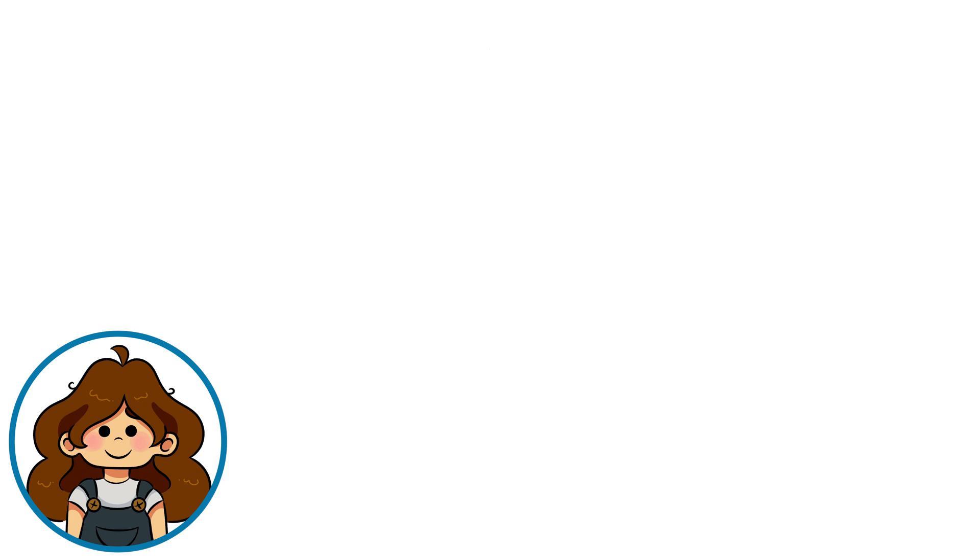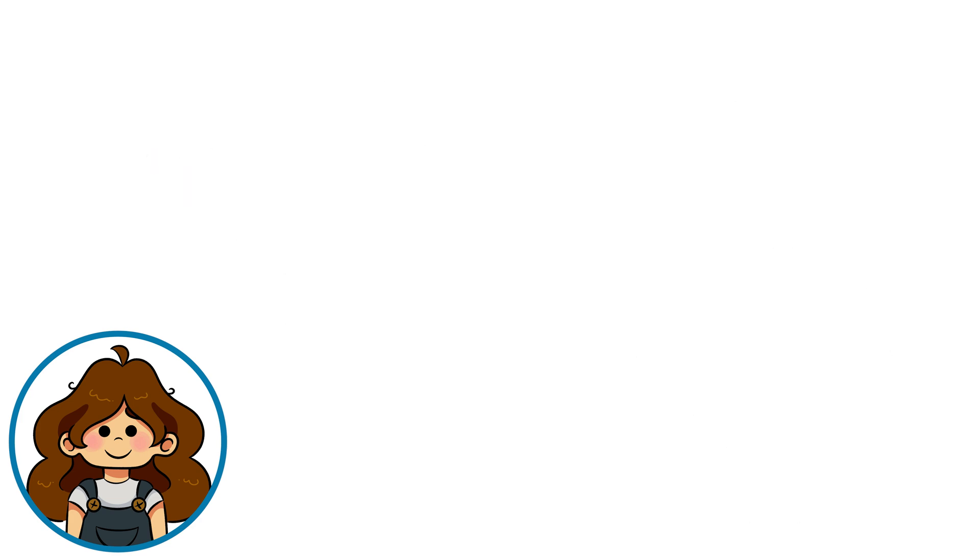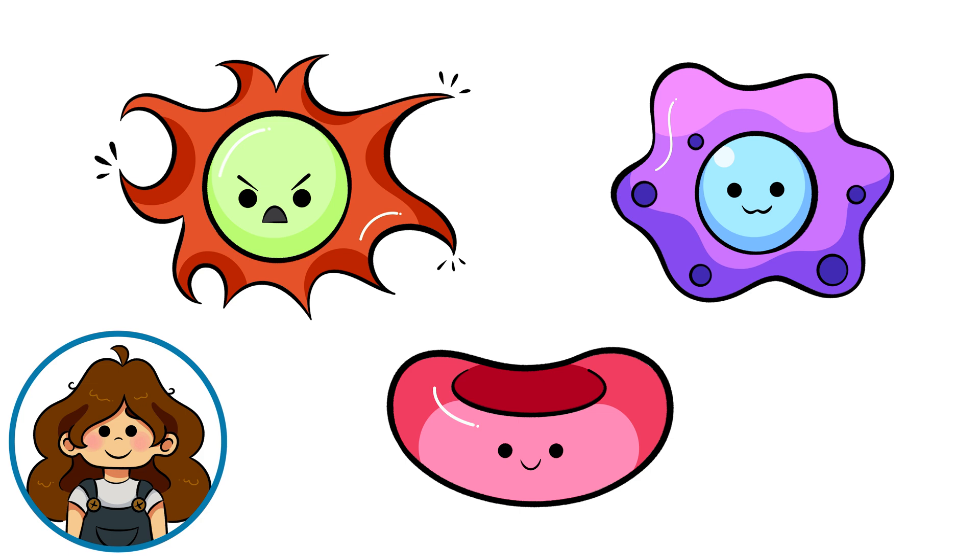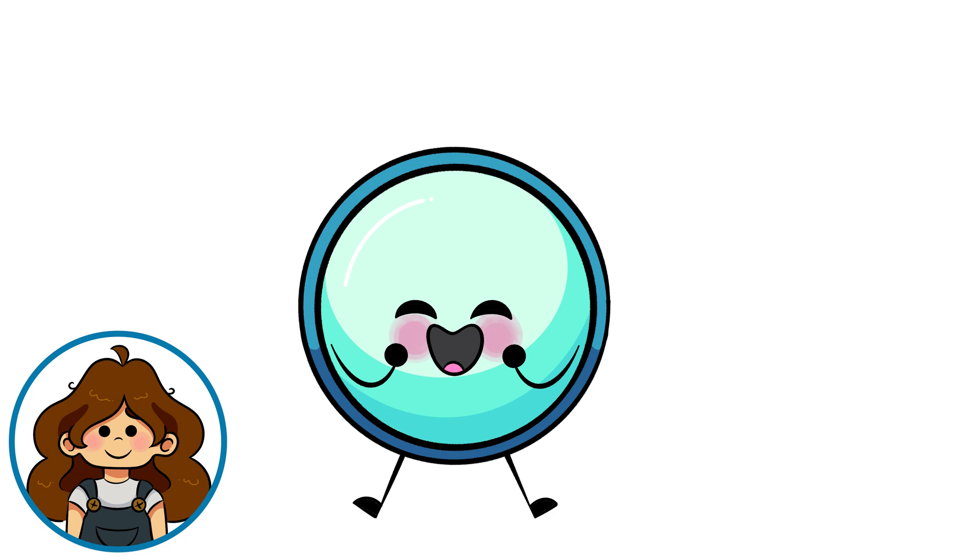Cells carry out essential functions in our bodies, from producing energy to removing waste. To complete these tasks efficiently, cells come in all shapes and sizes. Despite these differences, all cells have one thing in common, which is that they contain something called a membrane.